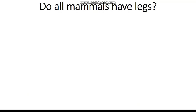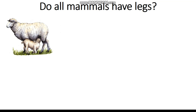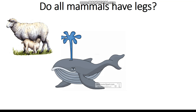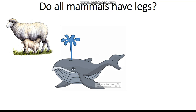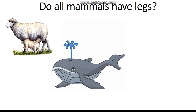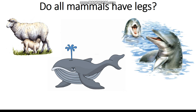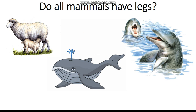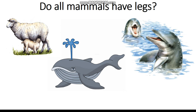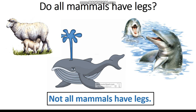Now let's see. Do all mammals have legs? What do you think? Most of them have legs like the sheep. But we have some exceptions. Look at this. This is the whale. The whale does not have legs, but it is actually a mammal. Do you know that? And look at this animal. This is the dolphin. The dolphin is also a mammal, and it does not have legs. So not all mammals have legs.